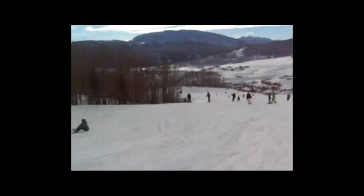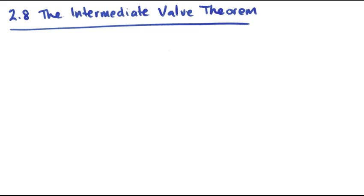This is the premise of the Intermediate Value Theorem. Okay, so we've got our skier and they start at 3,000 feet and they descend to 1,000 feet from time 0 to 40 minutes.